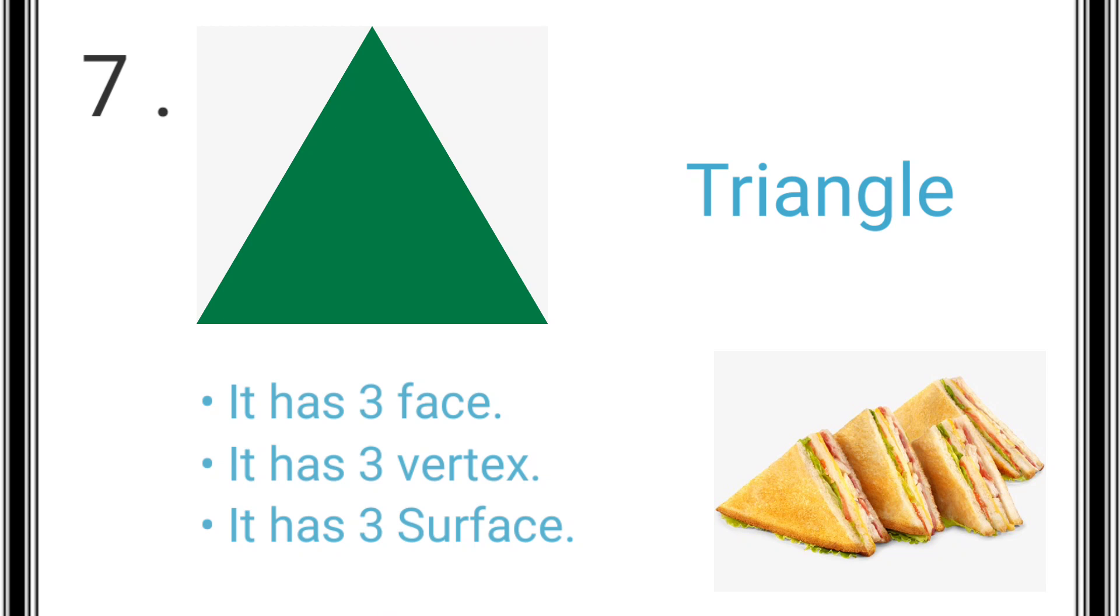The seventh shape is triangle. A triangle has three faces, three vertices, and three surfaces. Example: sandwich.